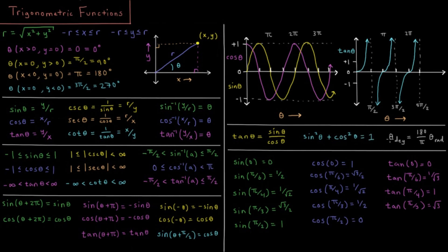The interconversion between degrees and radians: going from radians to degrees, multiply by 180 divided by pi; do the reverse to convert from degrees to radians, multiplying by pi and dividing by 180.